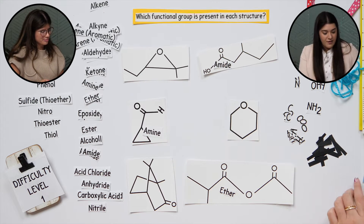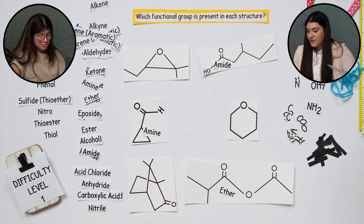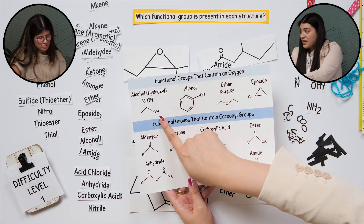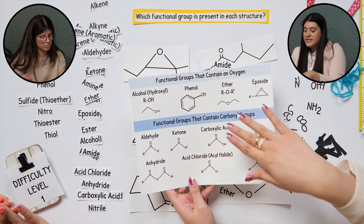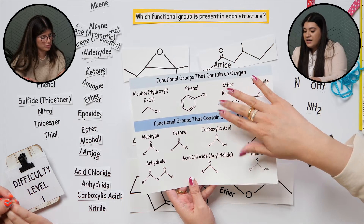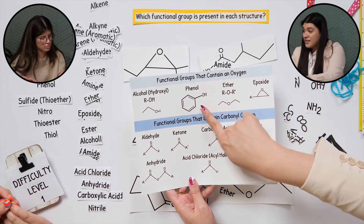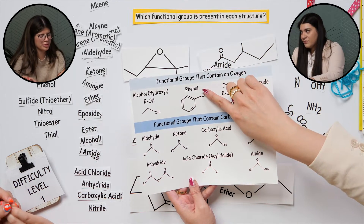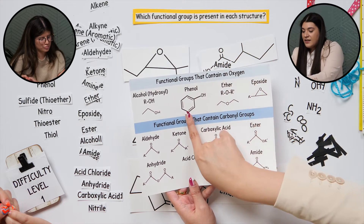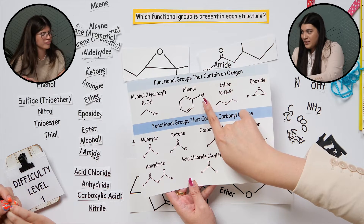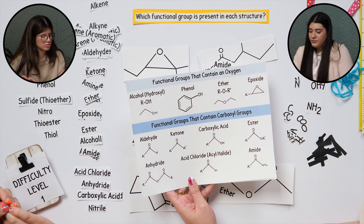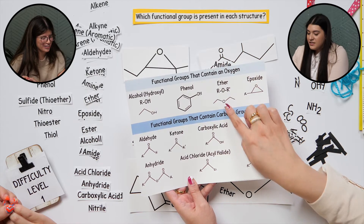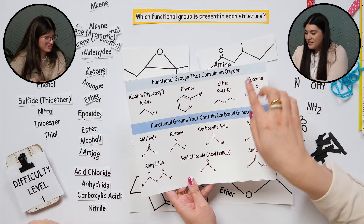Moving on to the ones that have an oxygen — which is pretty much all of these. The first type is an alcohol: just an R group or carbon chain connected to an OH. Next, there is a difference depending on your instructor. If they cover what a phenyl is, then an aromatic ring connected to an OH group would be a phenol. If they don't cover it, it could just be considered an aromatic ring and an alcohol.